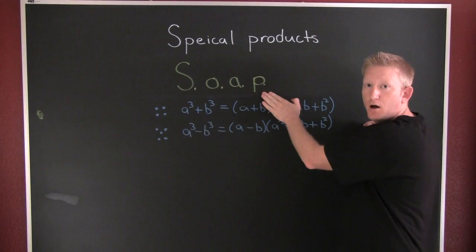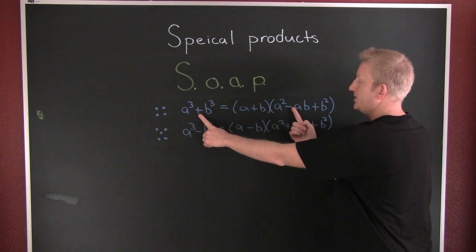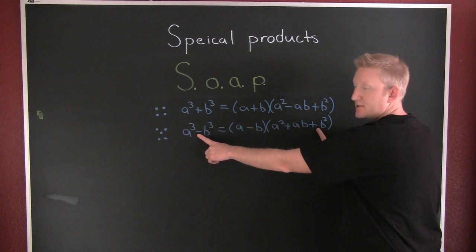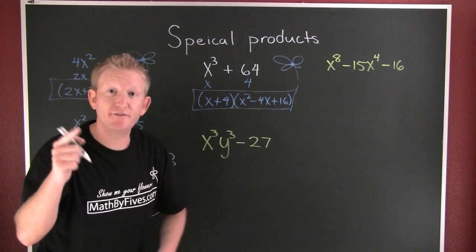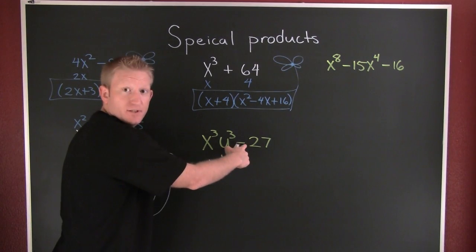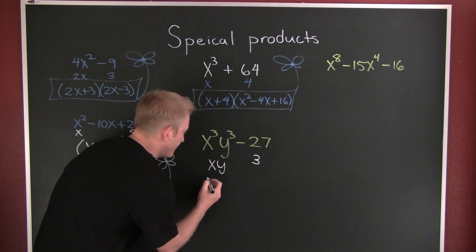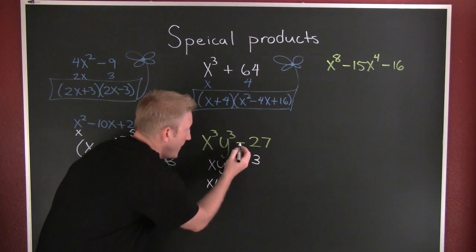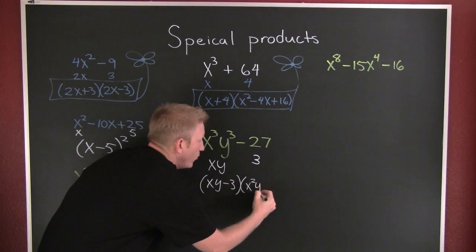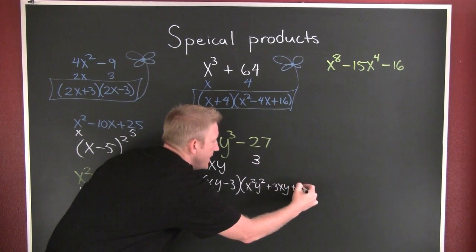Which one is this? Same, Opposite, Always Positive — referring to the signage: they're the same, opposite, always positive. It appears to be the difference of cubes. Is this the cube of something? Yes — xy. Is this the cube of something? Yes — 3. So every single time this is (xy − 3)(x²y² + 3xy + 9).